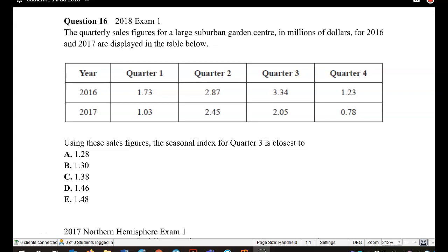So here we have question 16 from the 2018 exam 1. The quarterly sales figures for a large suburban garden centre in millions of dollars for 2016 and 2017 are displayed in the table below.